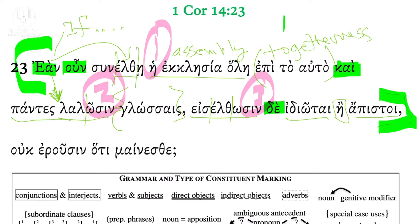So given this scenario, if this is what is indeed taking place — all these things are happening — what happens? Ouk erousin hoti mainesthē. 'Will they not say?' Erousin is a future from erō, meaning 'to speak.' It is a liquid stem — the stem ends with lambda, rho, mu, or nu. When you form the future tense, you typically have a sigma, but that's rejected because of the rho.